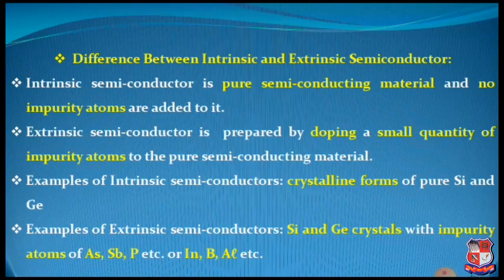Examples of intrinsic semiconductors are the crystalline forms — that is, stable forms of pure silicon and germanium. Moreover, examples of extrinsic semiconductors are silicon and germanium crystals with impurity atoms of arsenic, antimony, phosphorus, etc., or you can say indium, boron, aluminium, etc.